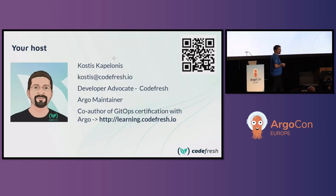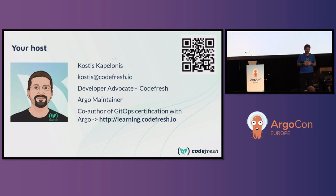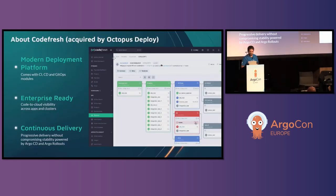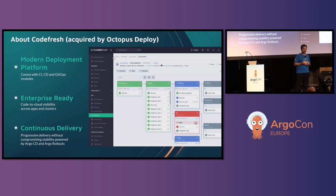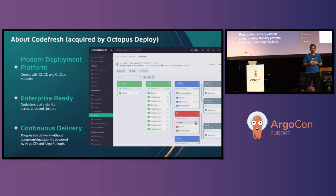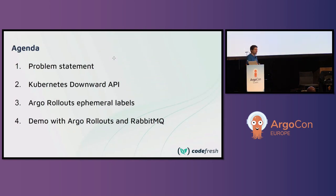My name is Kostis. I'm working at Codefresh as a developer advocate. I'm also working with the Argo team, mostly with ArgoRollouts. I'm also the co-author of the first ever GitHub certification, which you can find at the link and QR code. Codefresh is an enterprise solution on top of all the Argo projects, not just ArgoCD. And if you've seen the news, recently Octopus Deploy decided to acquire them.